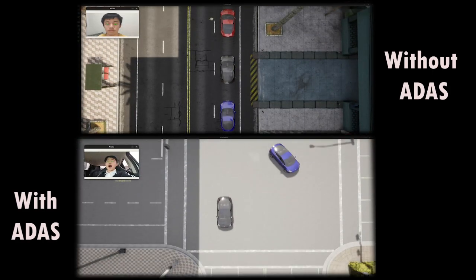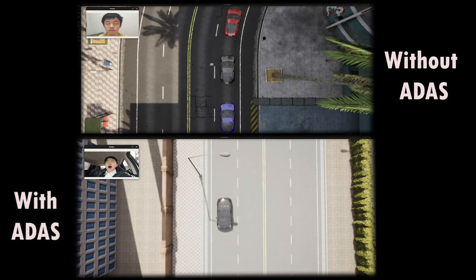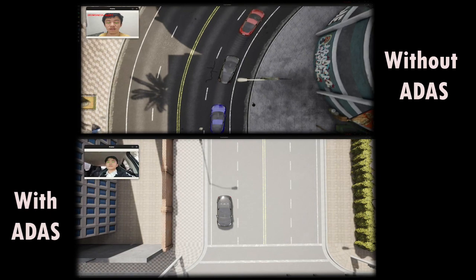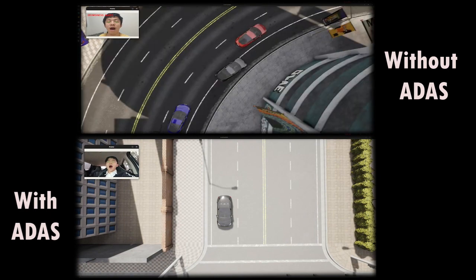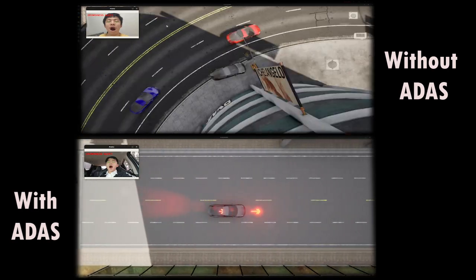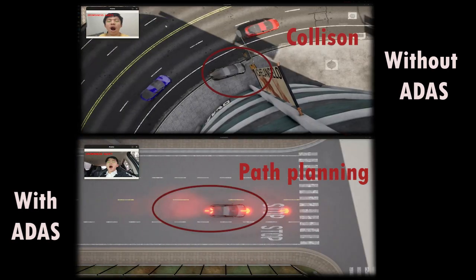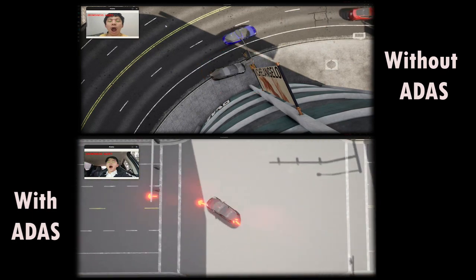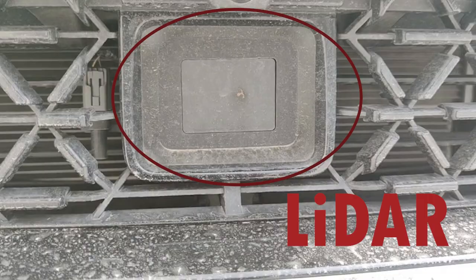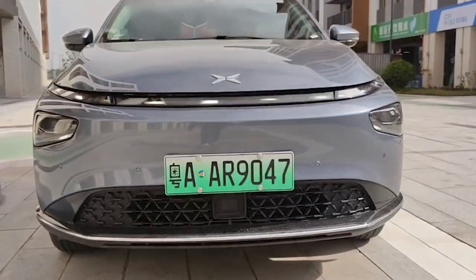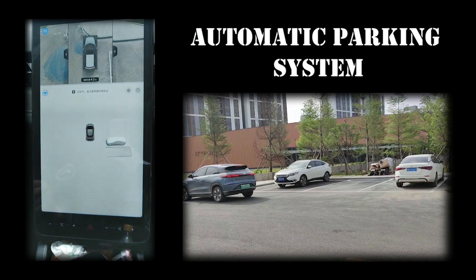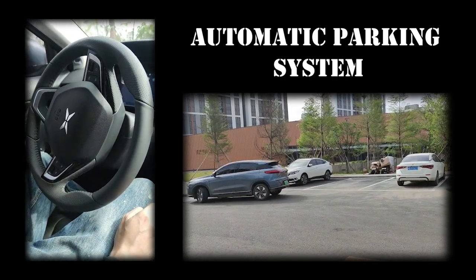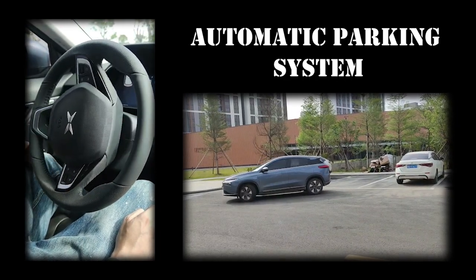Drivers with poor or insufficient sleep quality or those who drive for long periods are prone to fatigue. When ADAS detects that the driver is about to fall asleep, it will immediately find the nearest safe parking place and perform corresponding path planning. With the help of several cameras around the vehicle and infrared radar perception, ADAS calculates the optimal parking route and control sequence. This is a concrete example of the parking process.